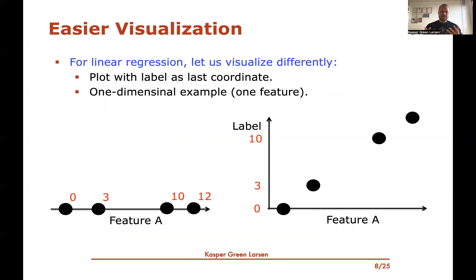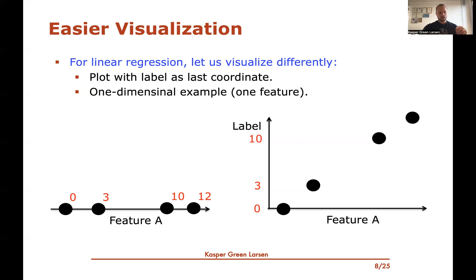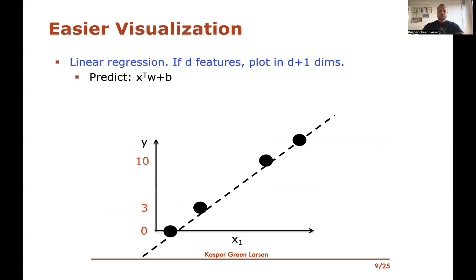For ease of visualization, at least when we have a single feature, there's a simpler way of visualizing the data: we plot the label as an extra coordinate of the point. For instance, if we have one-dimensional data, we could have four points with feature A plotted along the x-axis. The labels are numbers, so it makes sense to plot them as a second axis — moving each point up on the y-axis to the corresponding label value.